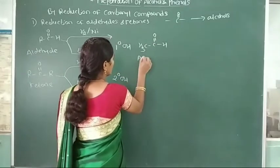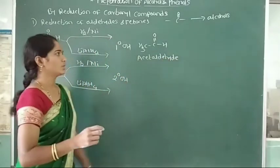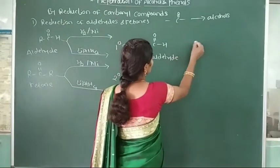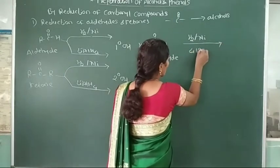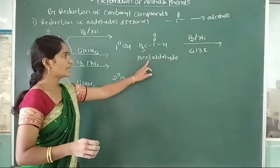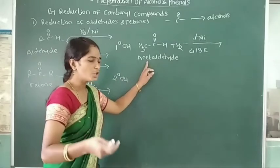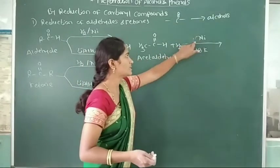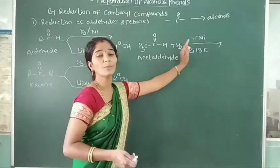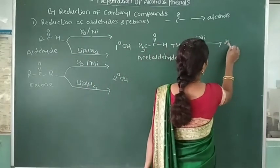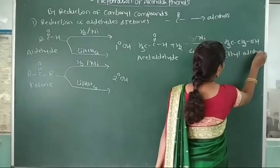First example for aldehyde: CH3CHO, it is called as acetaldehyde. This acetaldehyde is reduced with hydrogen in presence of nickel catalyst at higher temperature. This acetaldehyde is converted into primary alcohol, that is ethyl alcohol, CH3CH2OH.